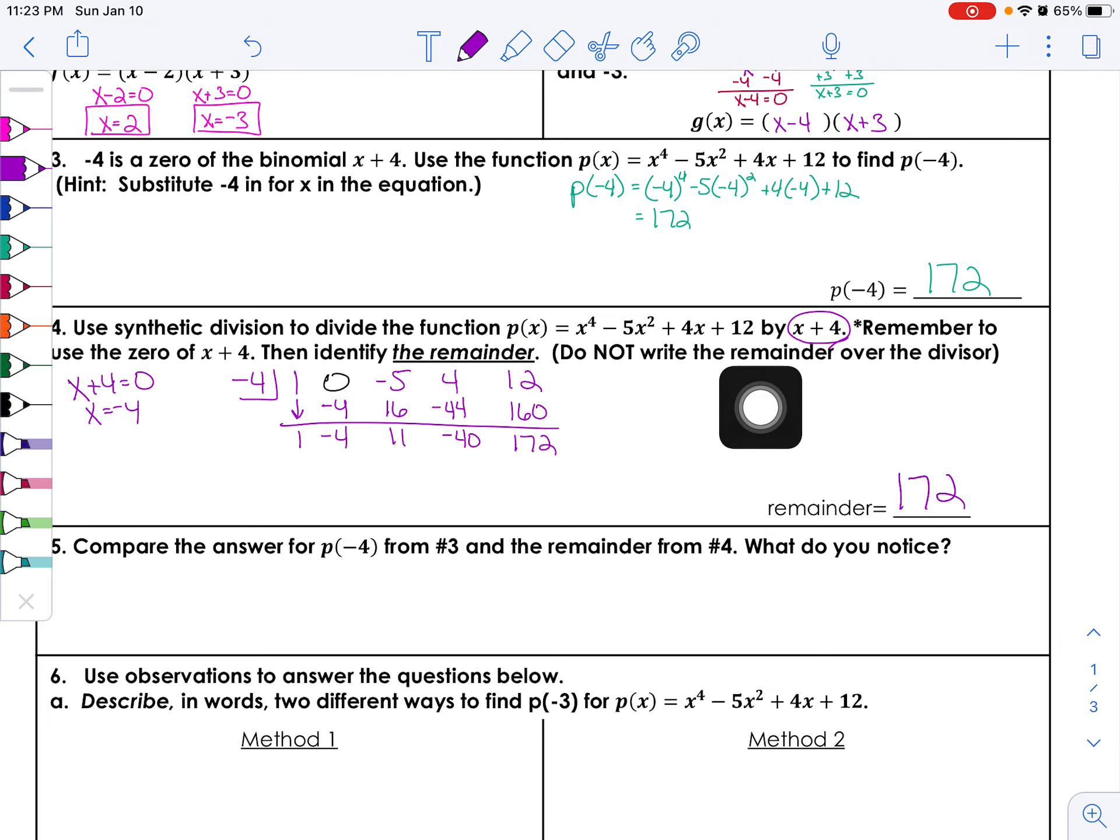All right, so my remainder here is 172. It says do not write the remainder over the divisor, so I follow their directions. Okay, take a second and I want you to compare the answer for p of negative four to the remainder of what we just got in problem number four. What do you notice?